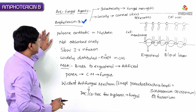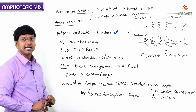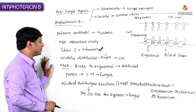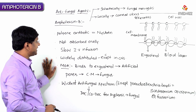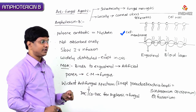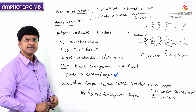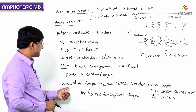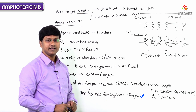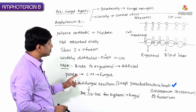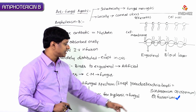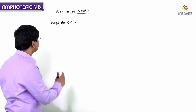To summarize: Amphotericin B is a polyene antibiotic similar to nystatin. It is not absorbed orally, so it is given by slow IV infusion. It is widely distributed except in the CNS. It binds to ergosterol in the fungal cell membrane, creating artificial pores, causing fungal death. It has the widest antifungal spectrum and is drug of choice for systemic fungal infections, but is not effective against Pseudallescheria boydii or Fusarium.